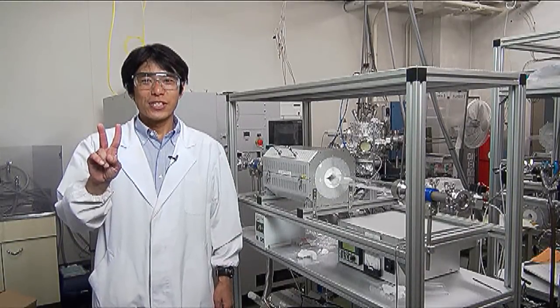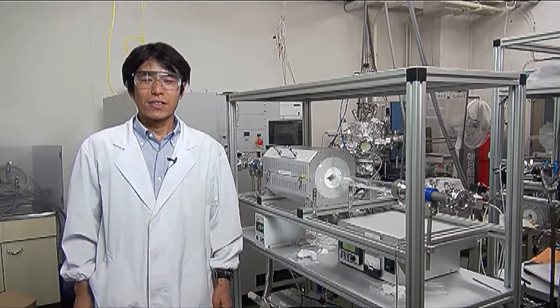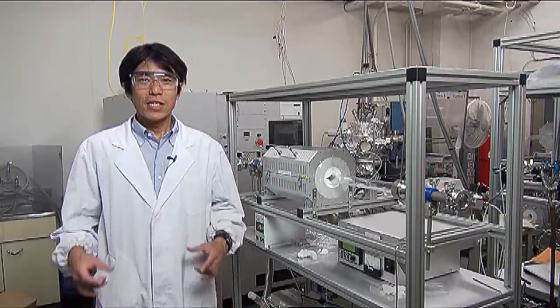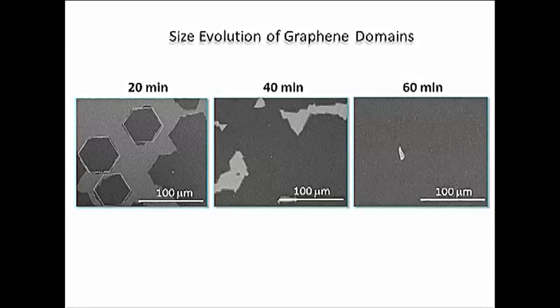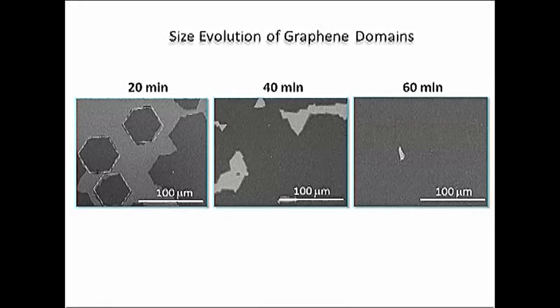There are two approaches to synthesize single crystalline graphene. One is to make very large graphene domains. These SEM images show the development of graphene domains with the reaction time. Large hexagonal graphene domains on copper surface begin to merge and make a continuous film. So making these graphene domains as large as possible is an important step.